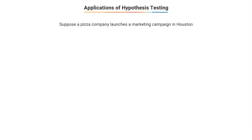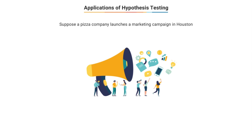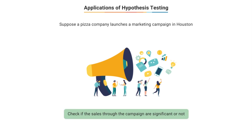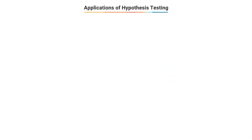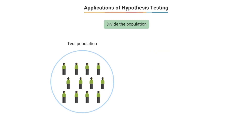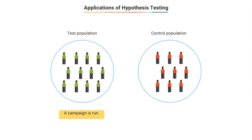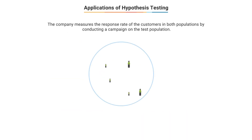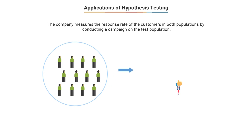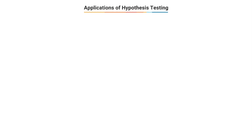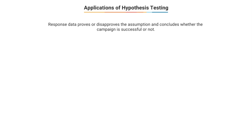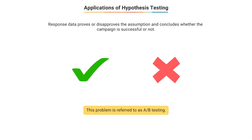One of the most common use cases of hypothesis testing is campaign effectiveness. For example, a pizza company plans to launch a special campaign in Houston for a new pizza. They want to check whether the sales through the campaign are significant or not. They divide the population into a test population, where the campaign is run, and a control population, where it is not. They then measure the response rate of customers in both populations. The assumption or claim in this case will be that the campaign is not successful, and using hypothesis testing we can use this response rate data to prove or disprove this assumption. Such problems are known as A/B testing.